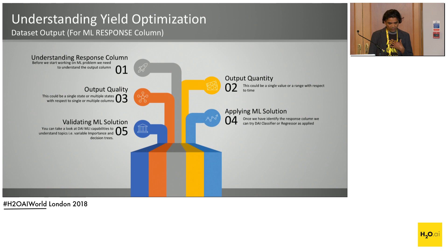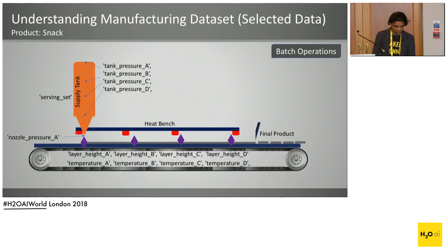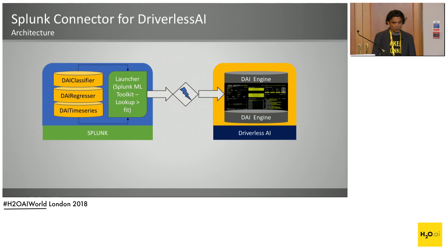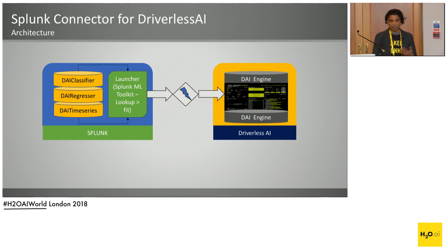We are talking about Driverless AI in terms of the Splunk design. Splunk has a machine learning toolkit and Driverless AI comes in really handy — it uses the same commands available in Splunk, and you can start everything directly from the Splunk console. Once you have selected data for a selected batch, you can take that data. The expectation is that you already have these data streams available in your Splunk cluster, and then you use the Splunk machine learning toolkit to start the launcher and run the commands.